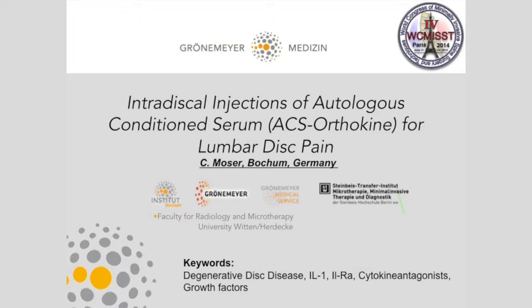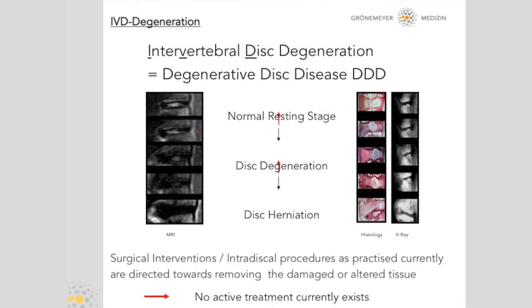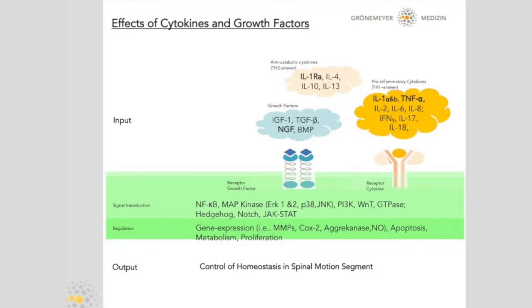There are a lot of factors which we can influence when thinking about and trying to treat a disease like intradiscal pain as a disorder. For example, the pro-inflammatory cytokines — the cytokines that are causing and signaling tissue damage — such as interleukin-1 and tumor necrosis factor alpha. But we also have anti-catabolic cytokines, like the interleukin-1 receptor antagonist, which is the naturally occurring antagonist to interleukin-1. Very important is that we have many growth factors, and knowledge about them is growing rapidly. All those factors have an impact on the homeostasis of a spinal motion segment.